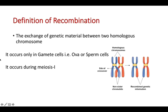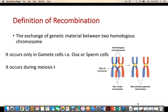A few important facts about recombination: recombination only happens in gamete cells — for example, sperm and ova cells. Within gametogenesis, the crossing over or recombination phenomenon occurs during meiosis I, also called the reduction division. Meiosis consists of two phases: meiosis I, where diploid cells become haploid, and meiosis II, which is essentially a mitotic division. So recombination is a meiosis I phase event.